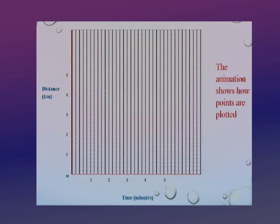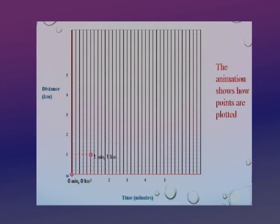Here is the animation that shows how we plot the various points. The first point is zero time and zero distance — zero minutes, zero kilometers. The second point is one kilometer, one minute: from one kilometer we draw a line, and from one minute we draw a line; wherever these two lines meet we have the point one kilometer, one minute. Similarly for the second point, two kilometers and two minutes — we draw a line at two kilometers and a line at two minutes; wherever the two lines intersect, we have the point two minutes, two kilometers.